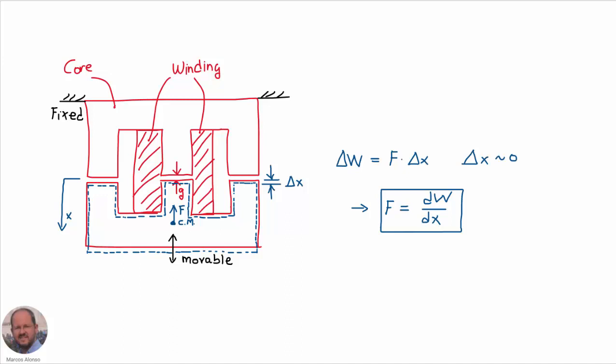Before using FEM to calculate this force, we are going to see an analytical solution based on the principle of virtual displacement. The idea is that if we move a little bit the bottom half of the core a small distance delta x, we will have to do work equal to the force times the distance. By the principle of conservation of energy, this work equals the change in energy of the system, so we can obtain the force.